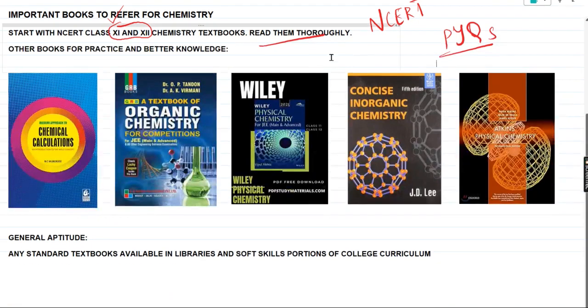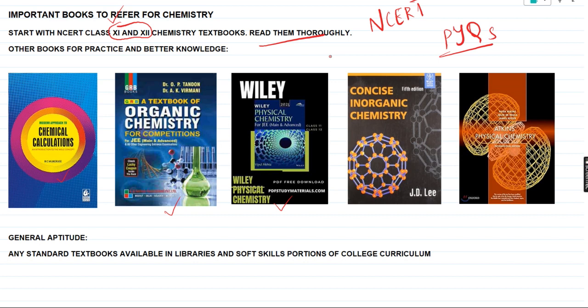Some of the important chemistry textbooks include RC Mukherjee, OP Tandon which is very important for organic chemistry, Wiley Physical Chemistry — Wiley publications have a lot of good books for concept clarity — Concise Inorganic Chemistry by JD Lee, and Atkins' Physical Chemistry. These are the books you should refer to after getting a good grounding in concepts from the NCERT chemistry textbooks.